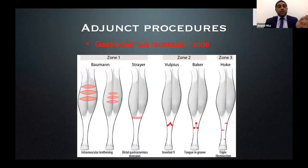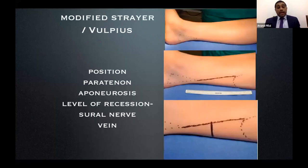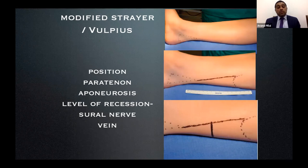Adjunct procedures include gastrocnemius recession. In these patients, the Achilles becomes a deformer as the calcaneum goes into valgus and over time becomes tight. Depending upon the Silfverskiöld test result, a gastrocnemius recession is often needed. The level can vary by preference. I mark out the Krager's fat pad, identify the muscle belly of the gastrocnemius, and make a small incision to reach the musculotendinous junction. It's important to be aware of the sural nerve, which has a vein running with it — if you know where the vein is, you know where the nerve is.